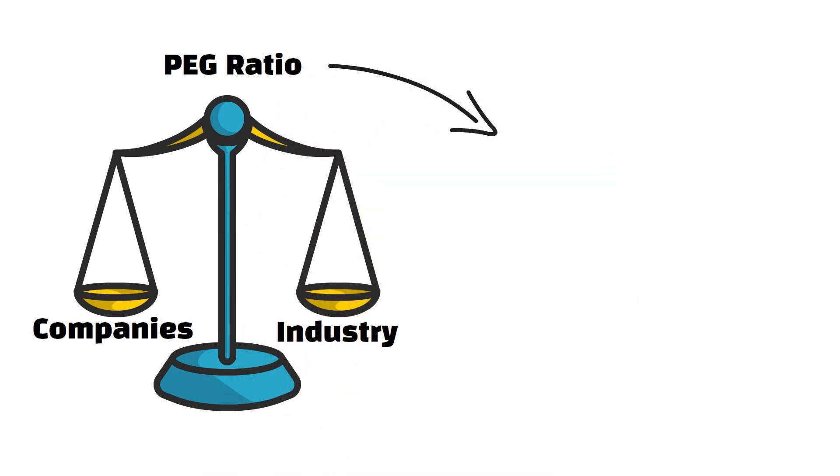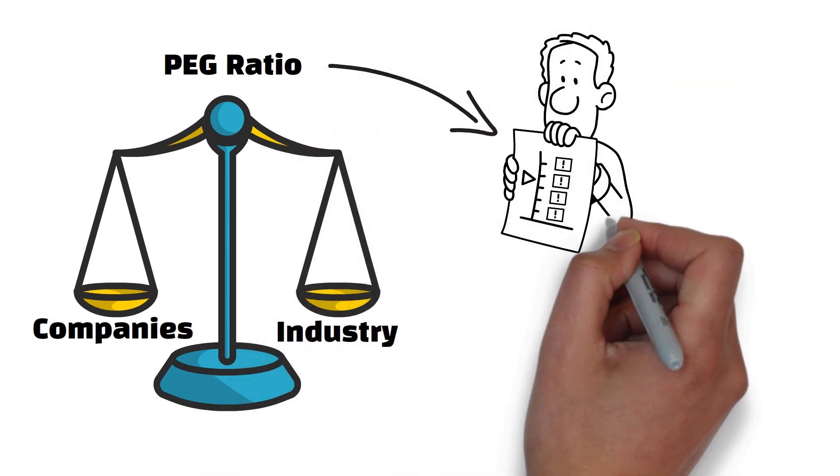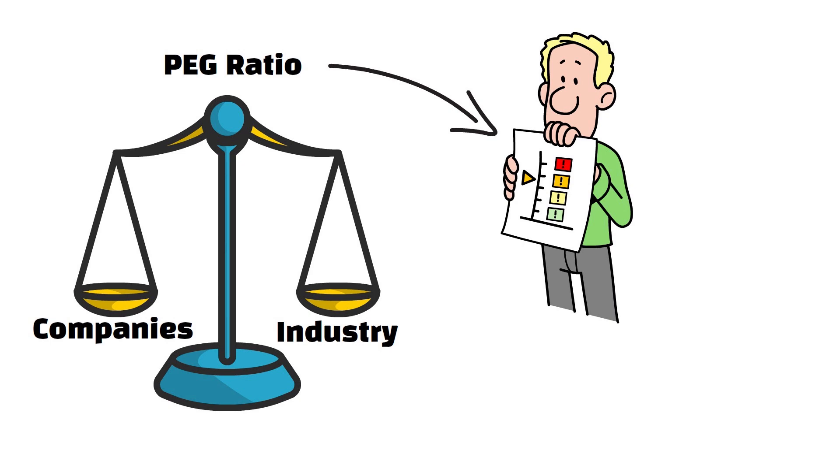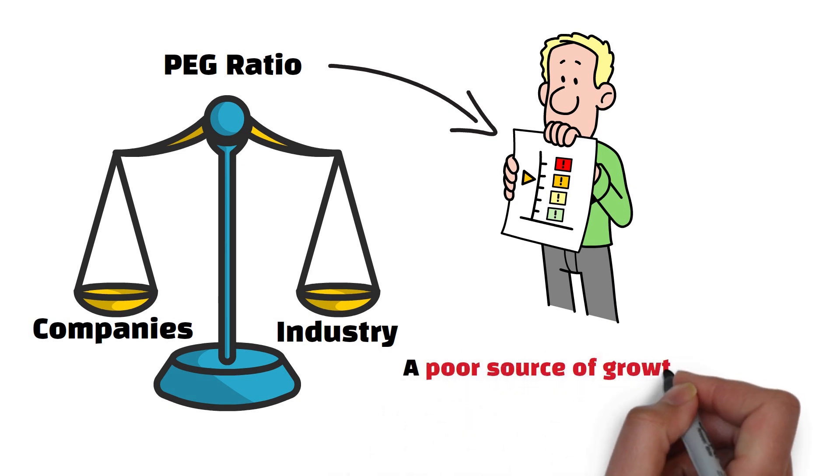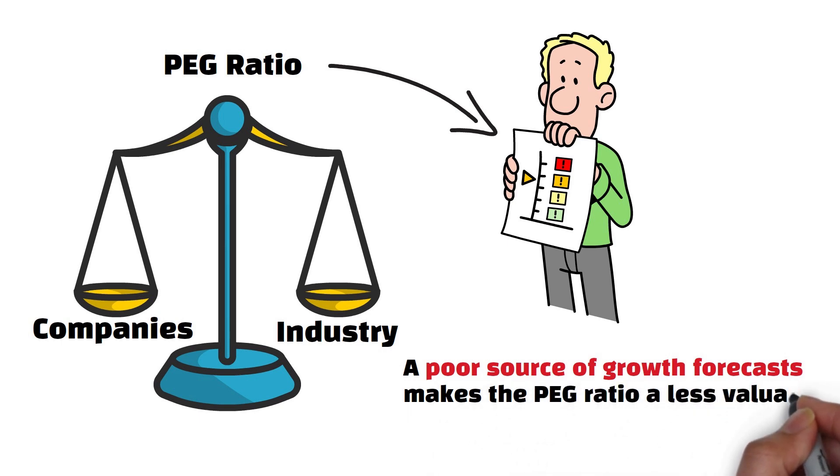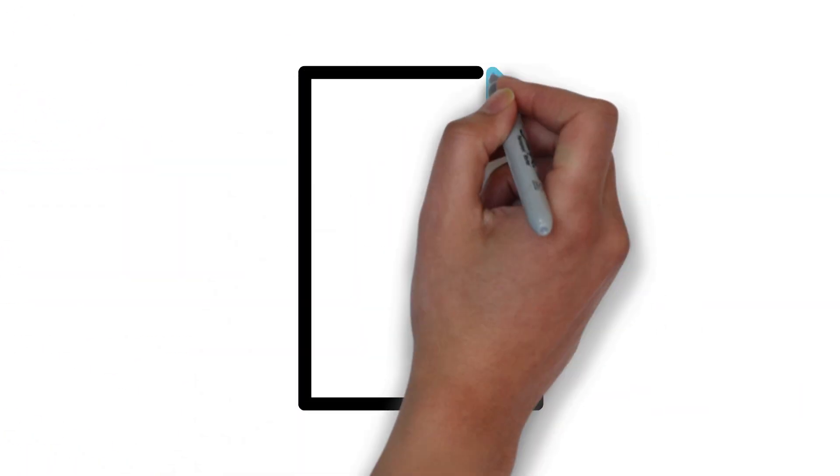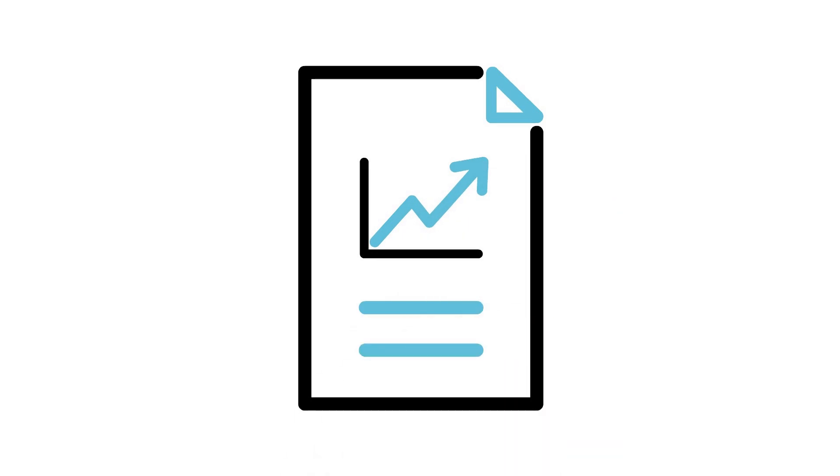While the P-E-G ratio can enhance the P-E ratio by adding growth forecasts, having reliable and accurate forecasts is key. Having a poor source of growth forecasts can make the P-E-G ratio a less valuable metric than the P-E ratio. The P-E ratio is one of the most widely used stock analysis tools because of its simplicity, but the simplicity leads to limitations.